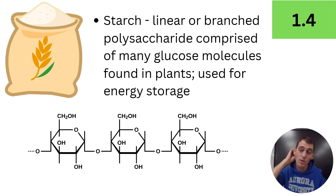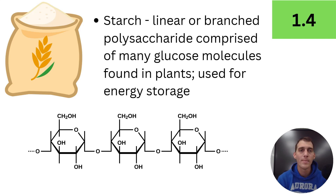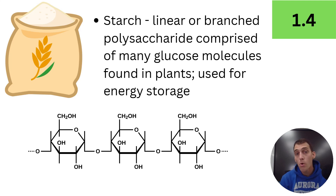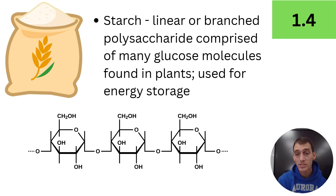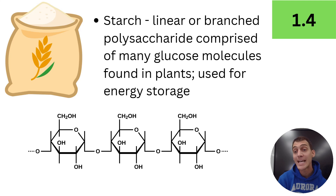Starch is the big one — when you think of carbs, starch is number one. Starch is basically the energy storage molecule. It links up a bunch of glucoses together for a plant's energy storage. It's a linear or branched polysaccharide comprised of many glucose molecules, found in plants and used for energy storage. So in wheat, potatoes, corn — all the carbs you're getting from those products are usually in the form of starch, a whole bunch of glucoses linked up into long chains. This is a polysaccharide we can break down, and in our modern diet, this is where we get a lot of our glucose from.